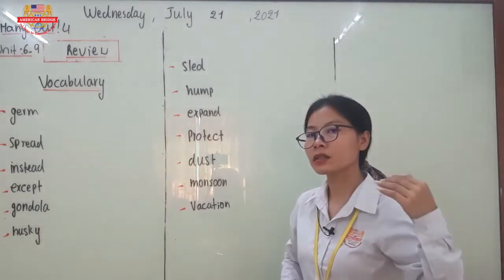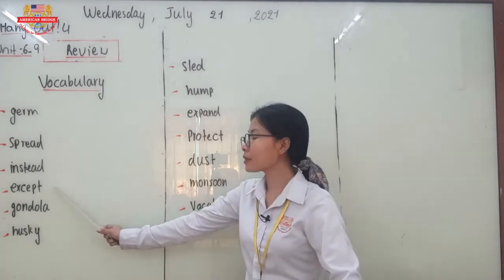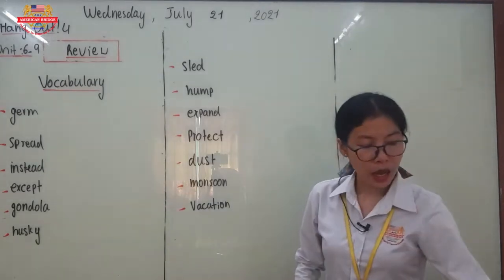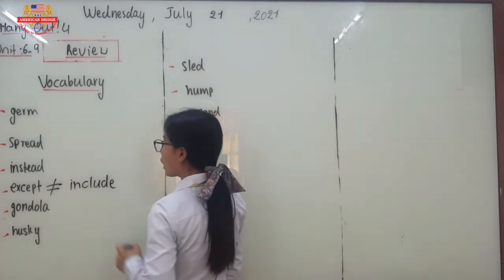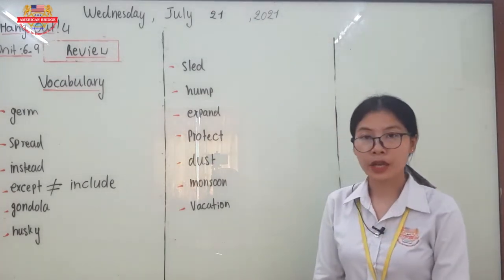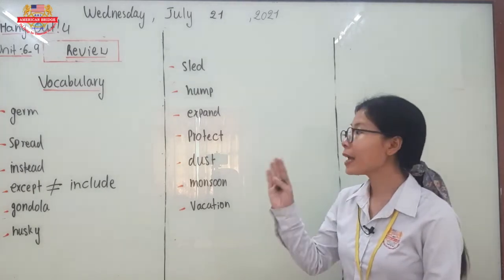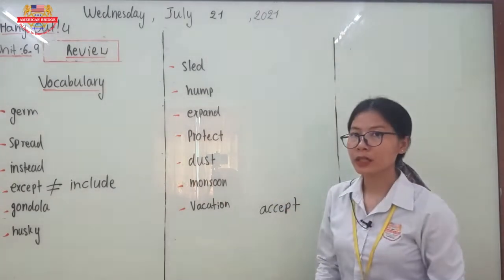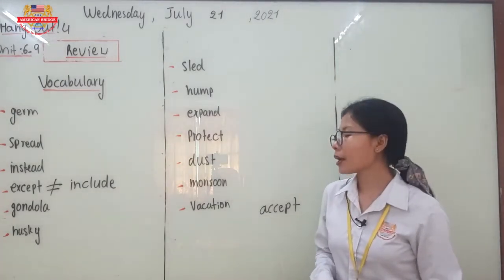Next, let's go to the word 'instead.' Instead means in contrast, or on the other hand. After that, we refer to the word 'except.' Except is the opposite of the word 'include.' Include means we count something together, while except means we don't count it. So except and include are opposites of each other.